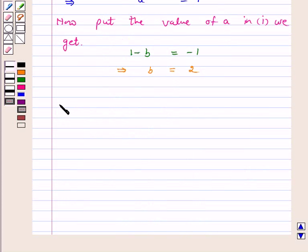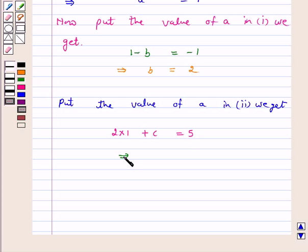Now, put the value of A in equation 2. We get 2 times 1 plus C equals 5, which implies C equals 3.